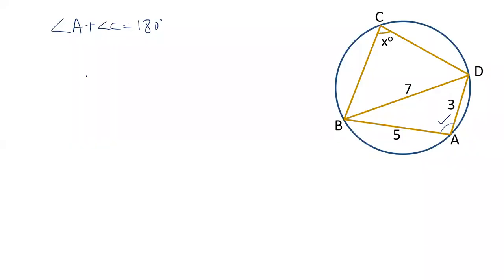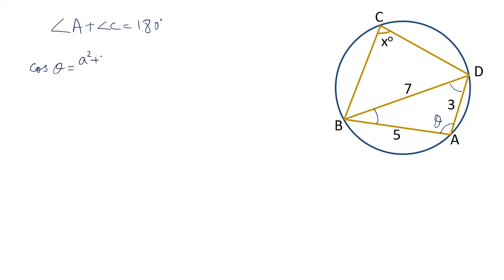Now the question is how we can find out this angle. Here I will give you a formula which is known as the cosine formula in a triangle. If three sides are known and we have to find out the value of any angle, we apply the formula: cos θ = (A² + B² − C²) / 2AB.